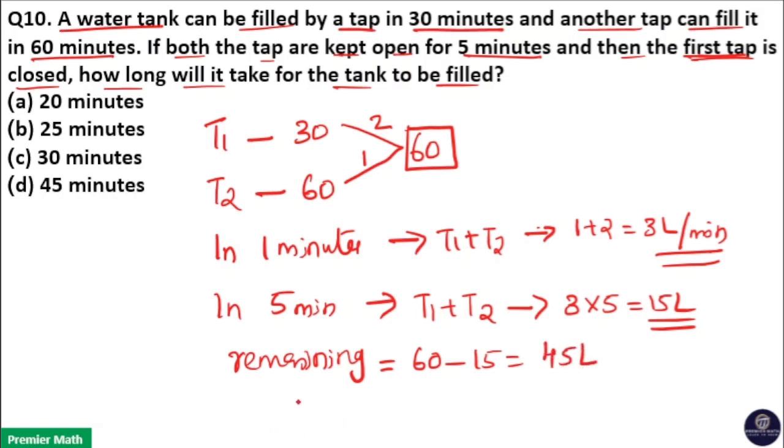This 45 liters is filled by tap 2. Time taken by tap 2 to fill this 45 liters is 45 by efficiency of tap 2 is 1 liter. That is 45 minutes. So option D is your answer.